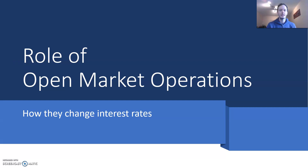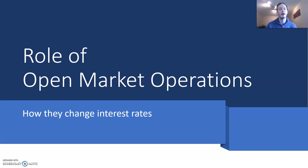Let's talk about the role of open market operations and how they actually change interest rates. This can be a really tricky concept to understand, but if you keep in the back of your mind that they do this by altering the supply of money — and remember what we learnt about how changes to supply can affect the price — that'll help you understand this in a much easier way.